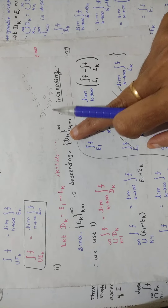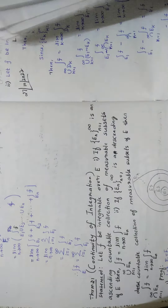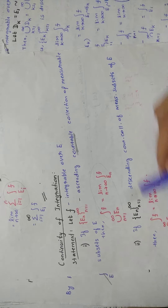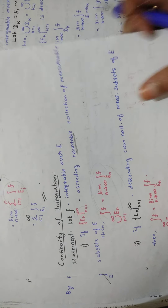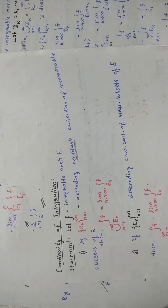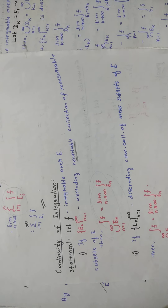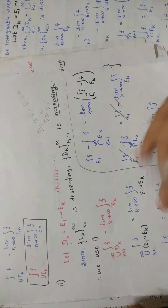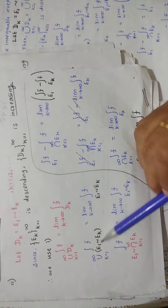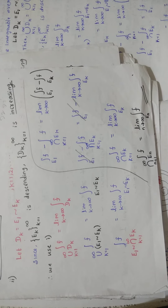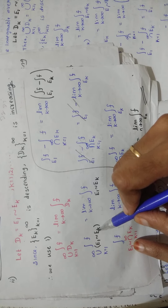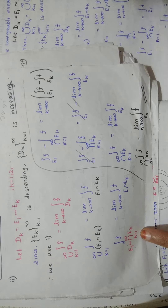Since the collection Dk is ascending, you can apply Part 1. Using Part 1, you write the result with Dk in place. Now this expression can be rewritten using De Morgan's identity: E1 difference union of Ek becomes E1 difference, and when you bring the union to that side the union becomes an intersection. That is De Morgan's identity applied here.